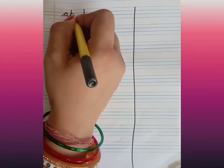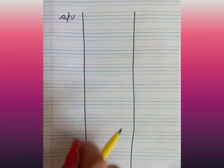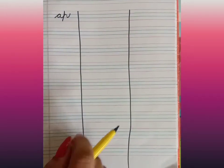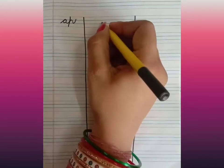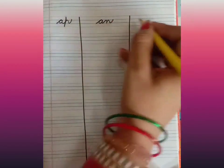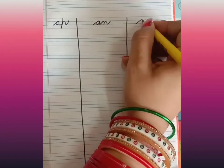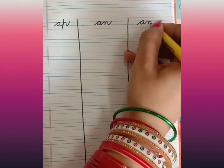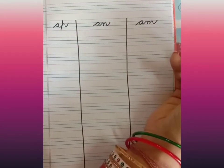Here the 'ap' words will come with all 'ap' words. Then 'an' and all 'an' words, and 'am' with all the 'am' words.